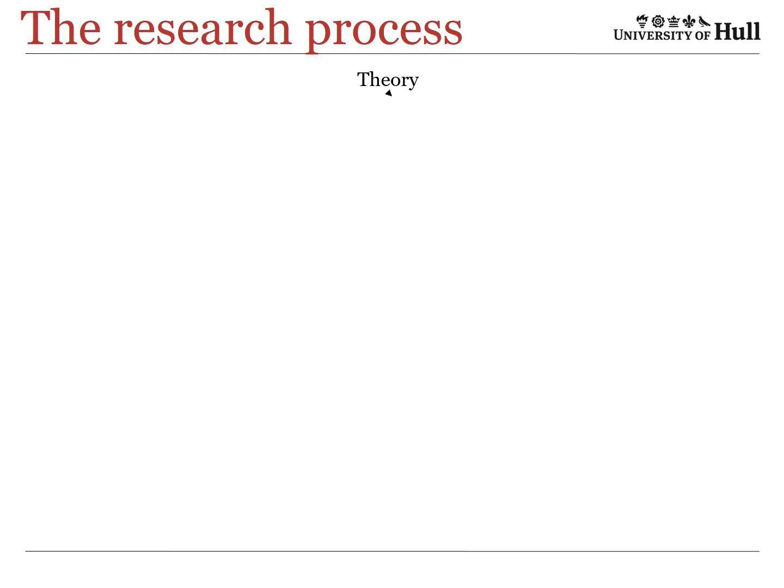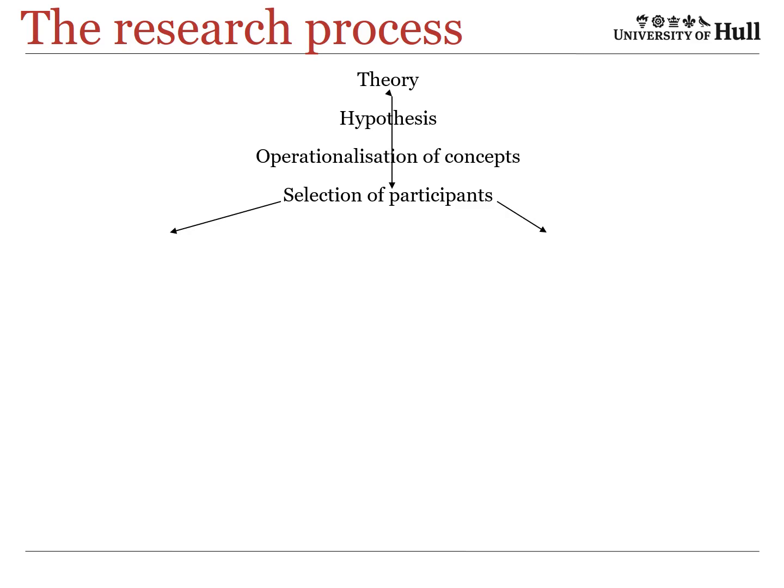All research begins with a theory, which is tested using hypotheses. A theory may be, for example, that gender affects people's intelligence, and a hypothesis may be that females perform better than males in examinations as an indicator of intelligence. A hypothesis has to be something that can be tested, so the concepts have to be operationalised — we need to have ways of measuring outcomes and defining who we want to include. Participants need to be selected somehow, and there's a dichotomy between survey designs and experimental designs.